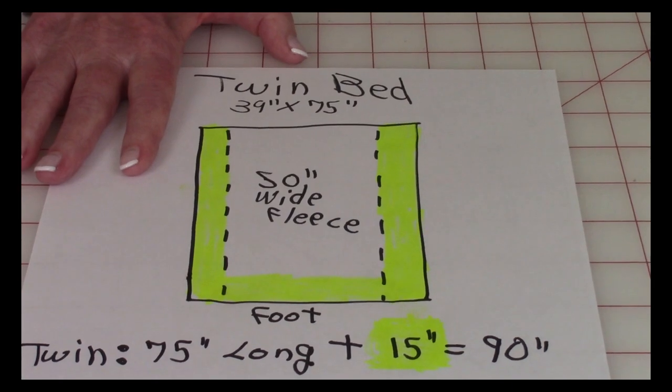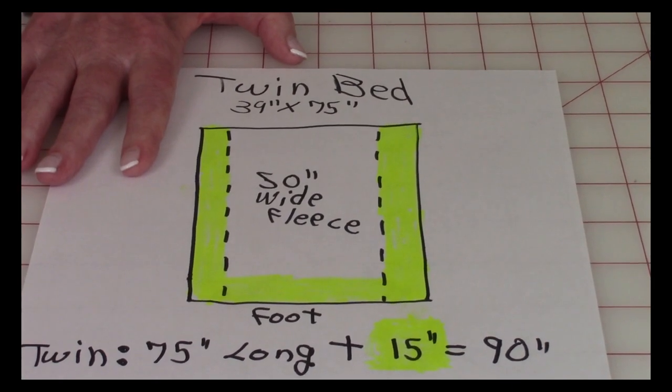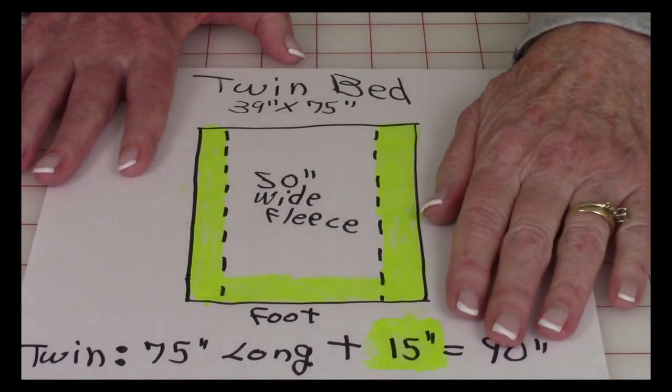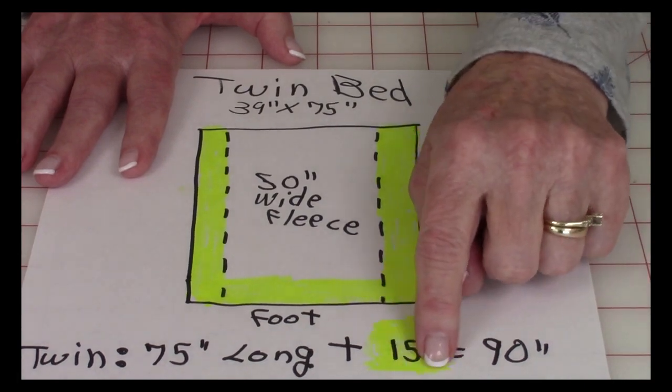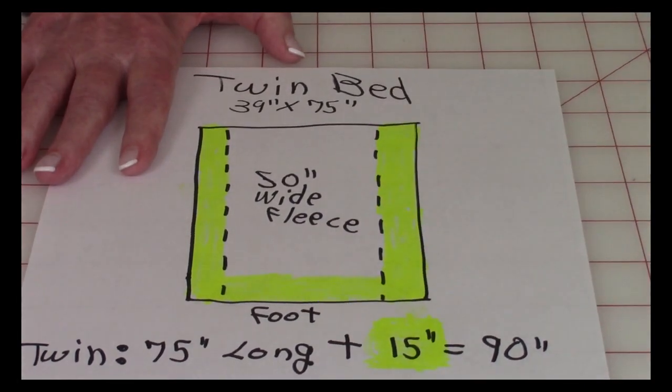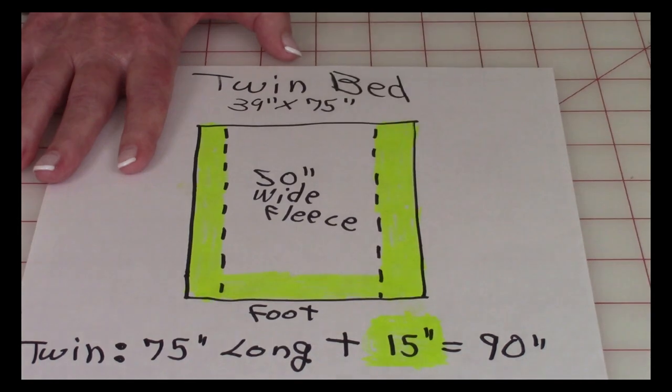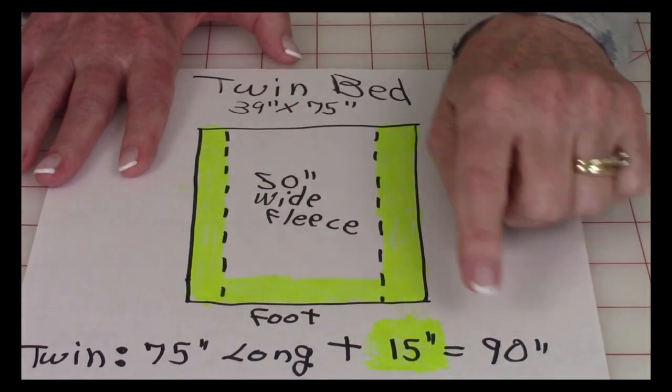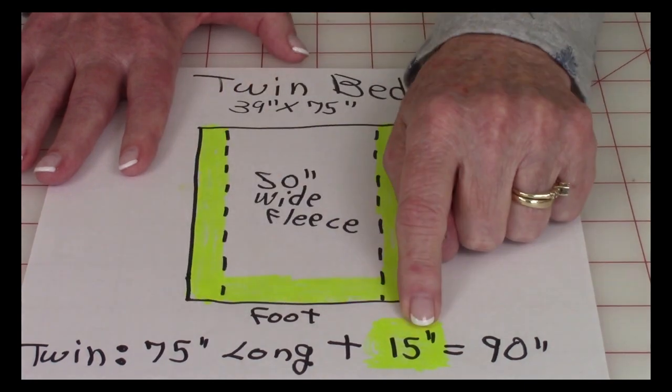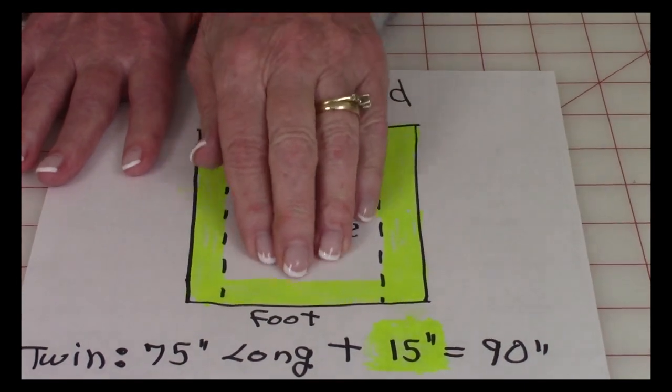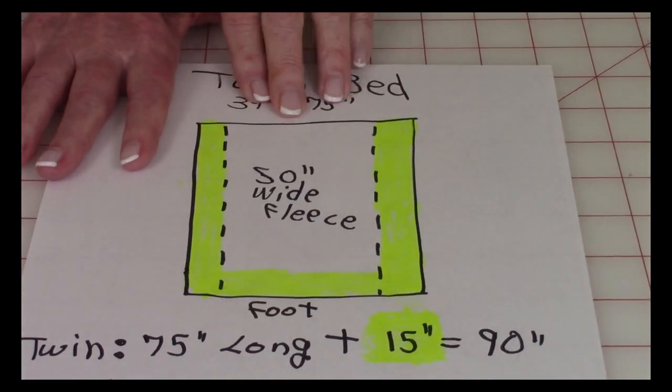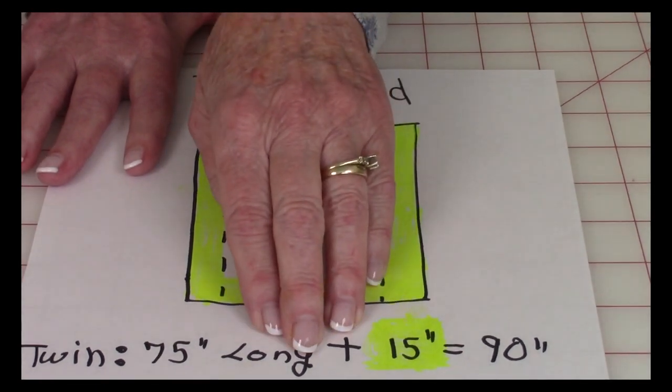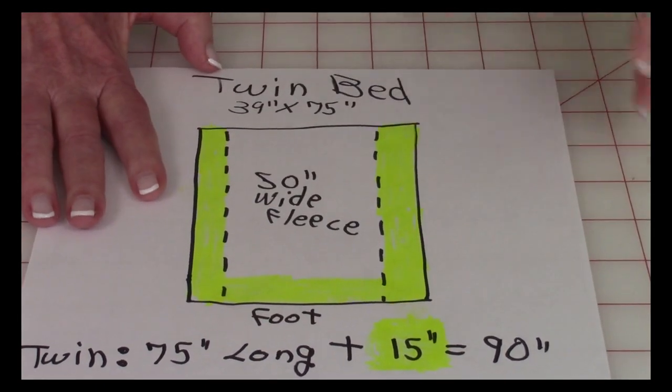Your drop length may be different. You may want it to go all the way to the floor. You might have an extra thick mattress, a pillow top mattress, and you want a longer drop length. So this is just a random number I threw in. Replace this number with what your desired length is. So 75 inches plus 15 equals 90 inches that I need. I need a strip of fabric 90 inches long that goes down there.